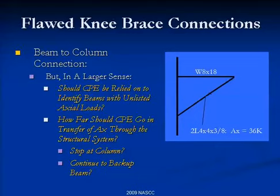But in a larger sense, should anyone expect the fabricator's PE — the CPE — to identify beams with missing axial loads? I know what my attorney would say: you shouldn't find any beams with missing axial loads, because then it will be expected that you find all of them, and when one is missed, it will be your fault. So you've got to be careful — that's really not in your scope.